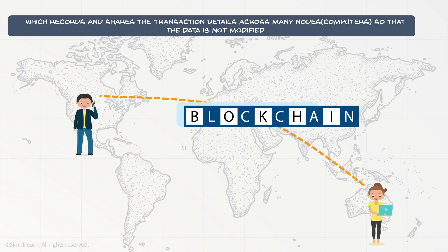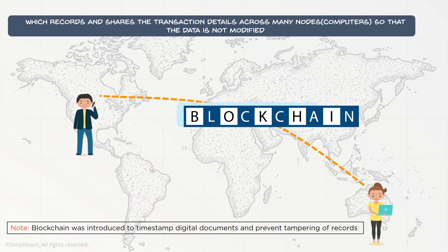Each and every transaction which happens on a blockchain network is distributed across all the nodes on the blockchain. Each and every participant has the same copy of the ledger and it's an immutable ledger. Once a record or a transaction is registered, it cannot be modified.